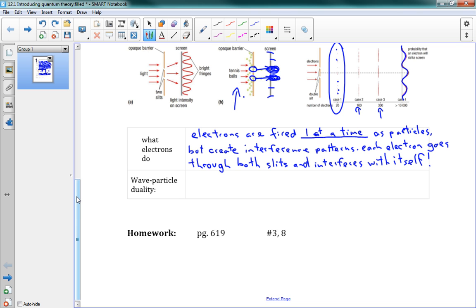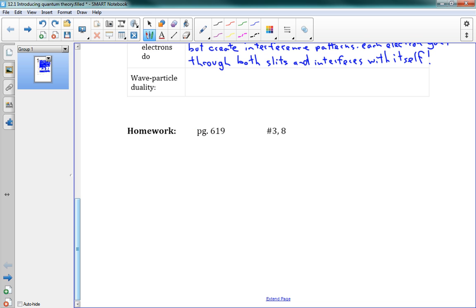But it still ends up as a single particle. It left as a single particle, it arrives as a single particle, because it's just left a single dot on the other screen, where that particle arrived. But somewhere in between, it became a wave. It had to have become a wave, because it's interfered with itself. Somehow it's gone through both paths at the same time. This is absolutely what happens, and our best explanation is that it's both. It's both a wave and a particle at the same time. And that is this idea of wave-particle duality.